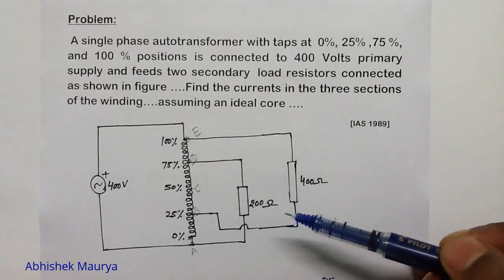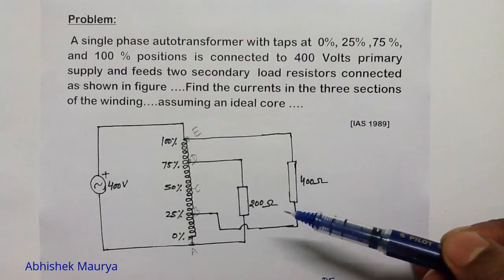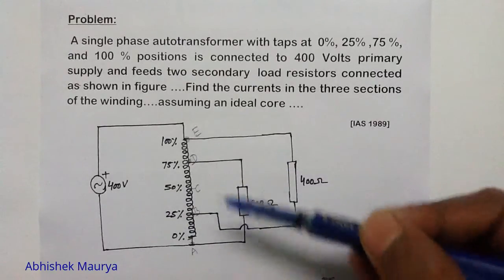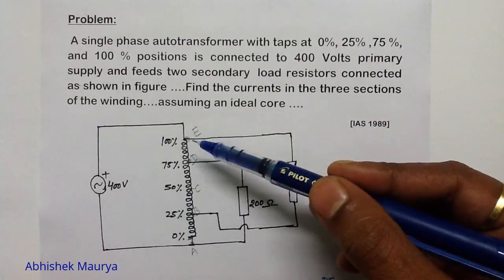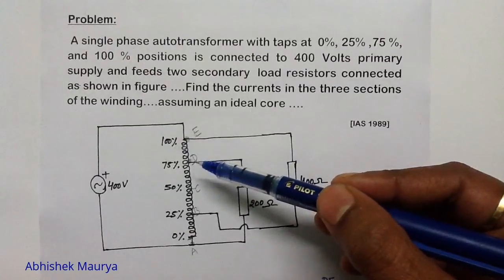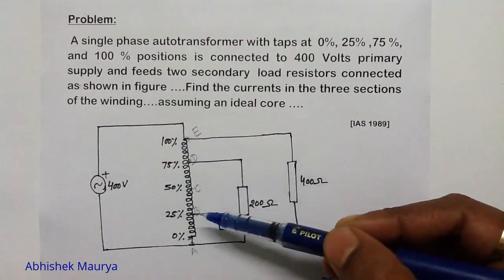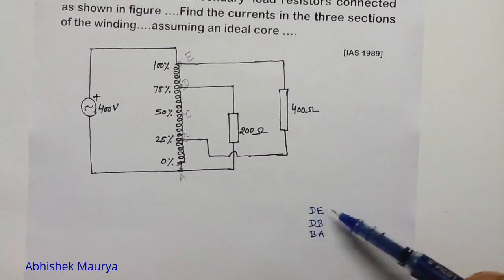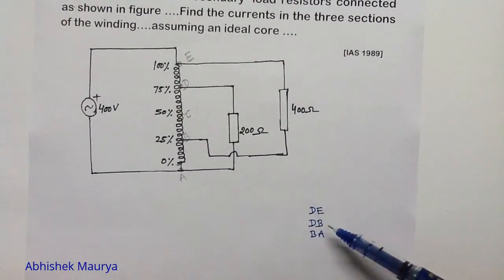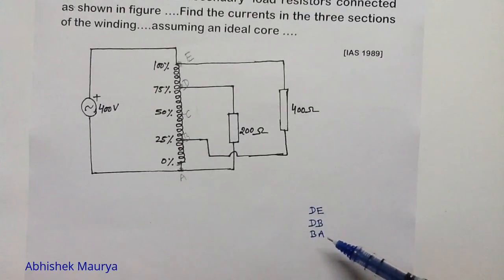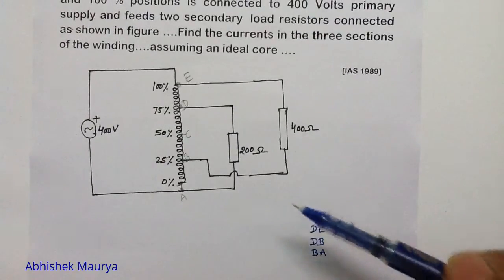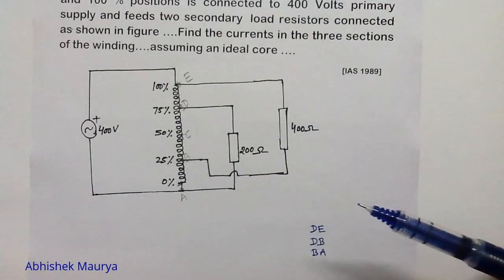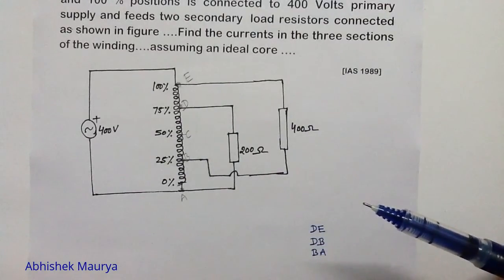In this figure, you can see that there are three sections in this autotransformer winding. The first section is ED, the second section is DB, and the third section is BA. We have to calculate the currents in these three sections of the autotransformer winding, assuming an ideal core, meaning we neglect the losses.